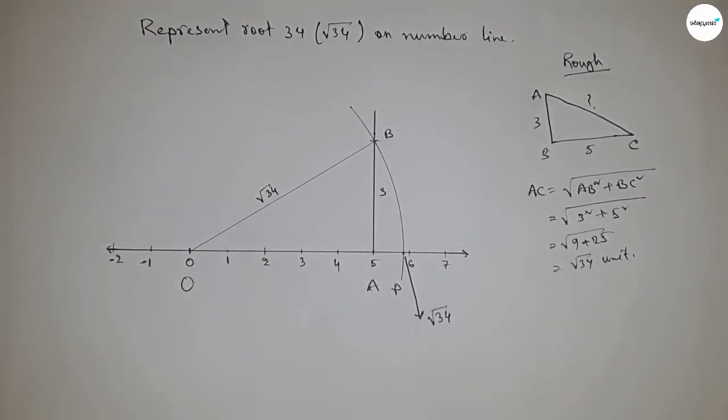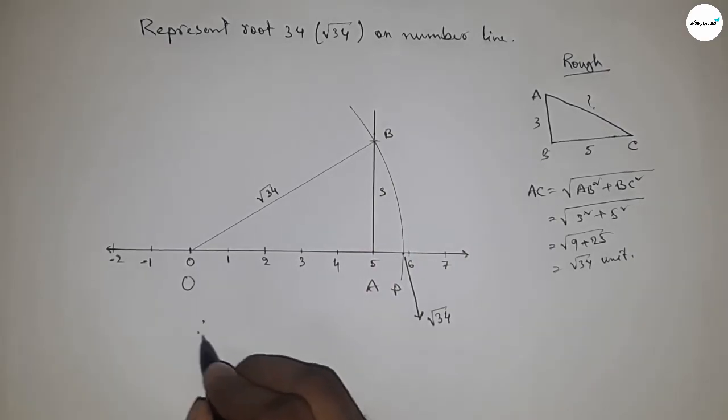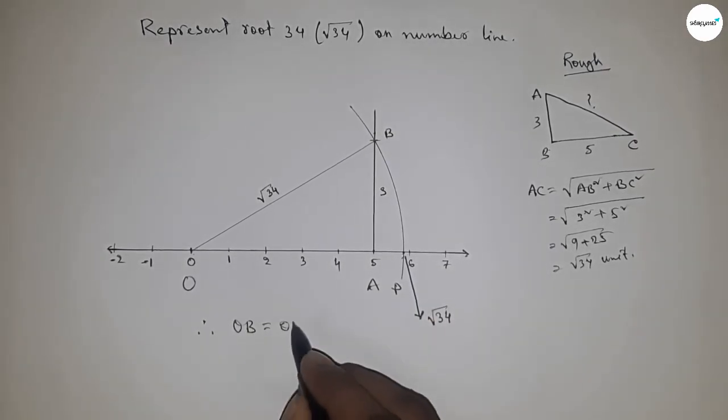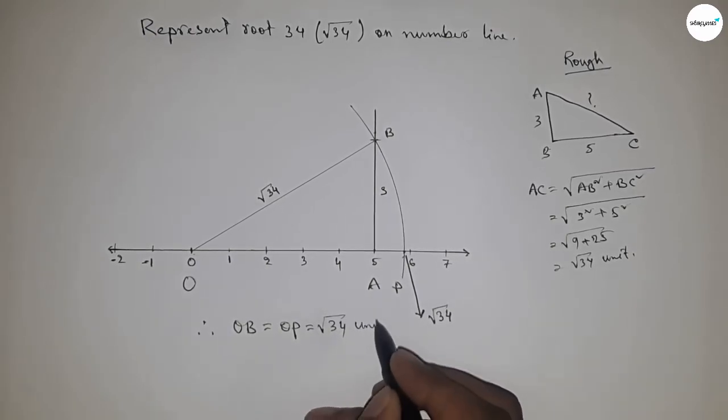Therefore, distance OB and OP are equal, equal to root 34 units.